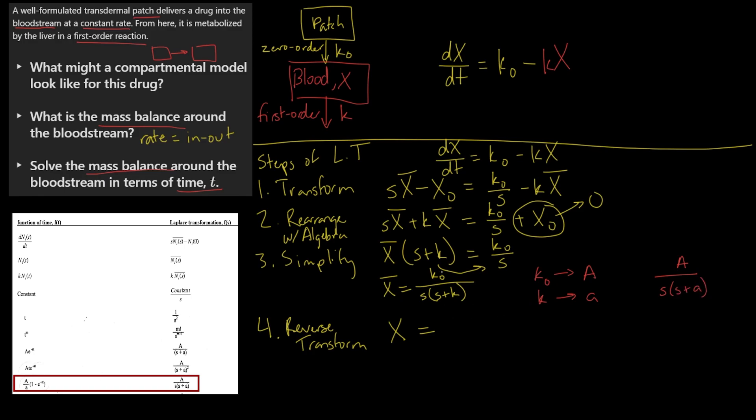This then gives you, you convert it back, you get capital A over lowercase a times (1 minus e^(-kt)). And that's your reverse transform solved.